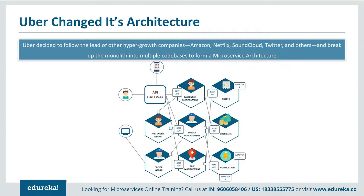So to avoid such challenges, Uber decided to follow the lead of hyper-growth companies like Amazon, Netflix, SoundCloud, and Twitter, and broke down its monolithic framework into multiple code bases to form a microservice architecture. This is how the new architecture looks like. We can clearly see the introduction of an API Gateway which connected all the drivers with the passengers. From the API Gateway, all the internal points were connected — such as passenger management, trip management, driver management, and so on. Another change is the introduction of individual separate deployable units.